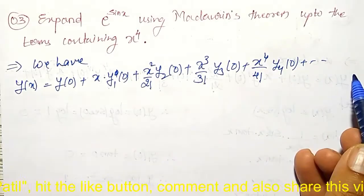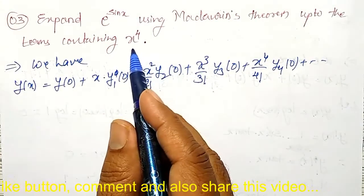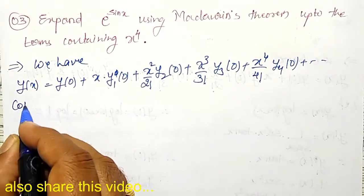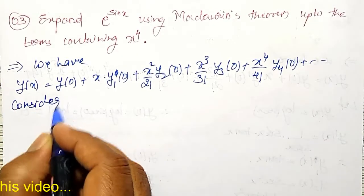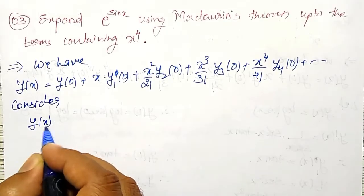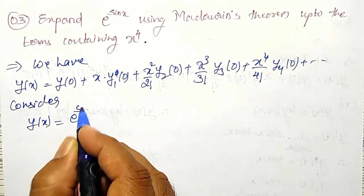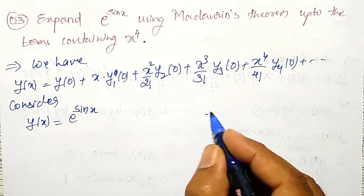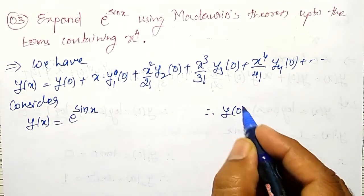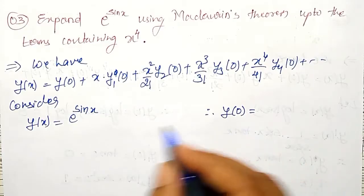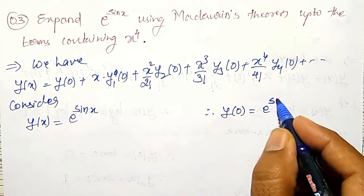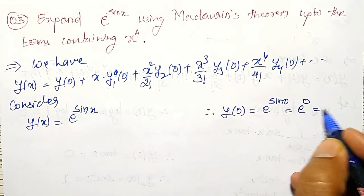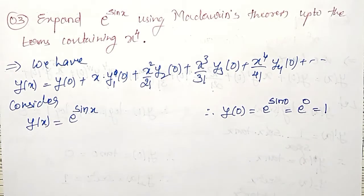We want up to x to the power 4. Consider y(x) is equal to e to the power sin x. Therefore, y value at x equal to 0: y(0) will become e to the power sin 0. That is e to the power 0, which is nothing but 1.